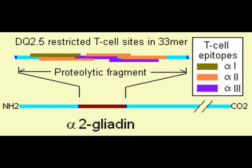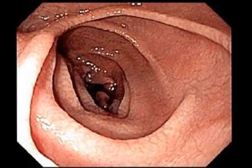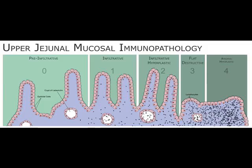Celiac disease, spelled celiac disease in North America and often celiac sprue, is an autoimmune disorder of the small intestine that occurs in genetically predisposed people of all ages from middle infancy onward.